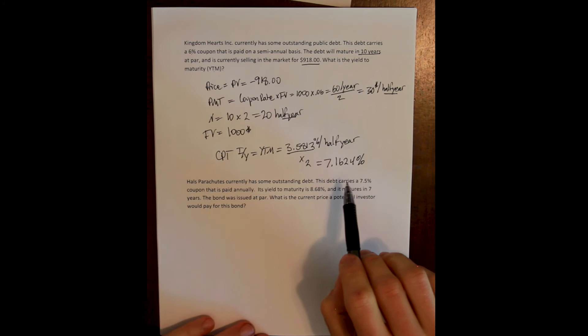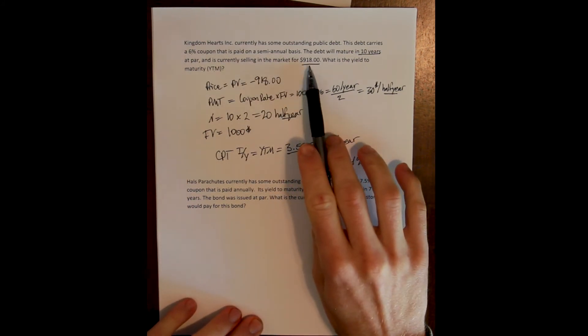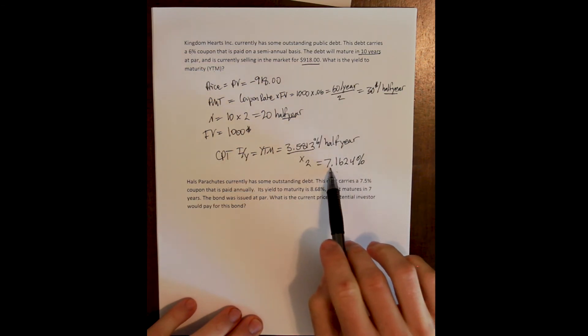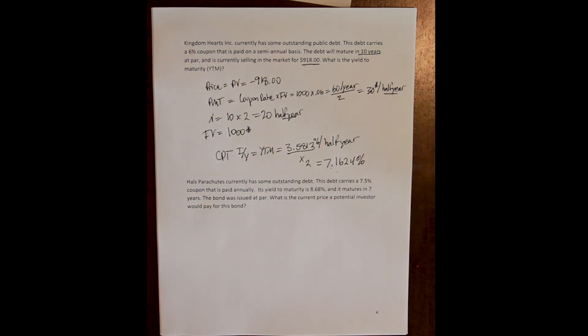And we see that, indeed, our fundamental rule has held true. Prices and rates move in opposite directions. So if our yield to maturity is greater than our coupon, then the price must be less than the face value. We must have a discount here.